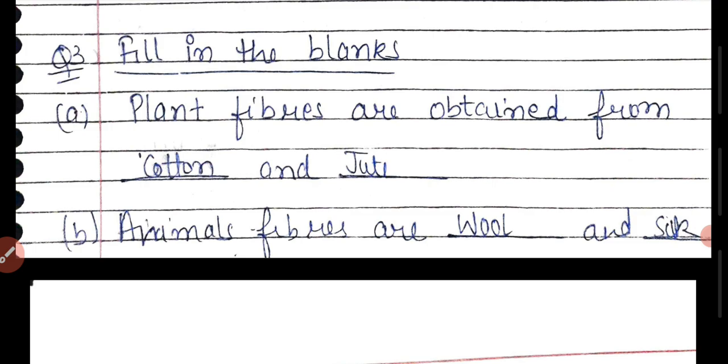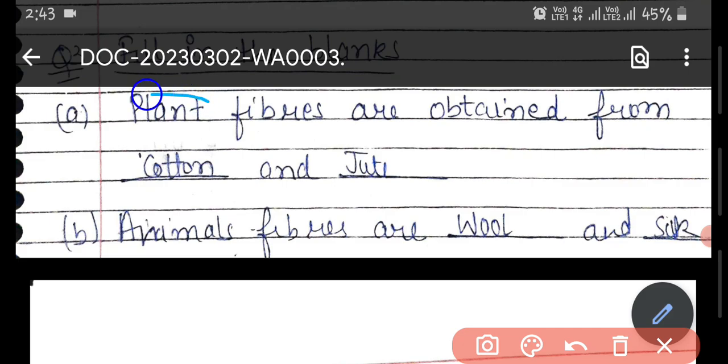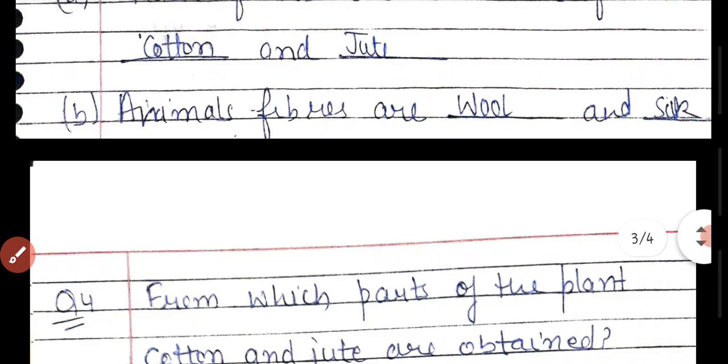Plant fibers are obtained from cotton and jute. Animal fibers are wool and silk.